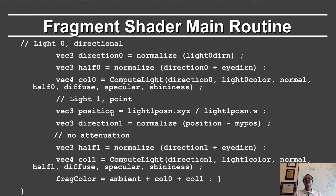For light 1, we first find the position by de-homogenizing: taking light 1 position x, y, z and dividing by w. The direction to the light source is then the position of the light minus the vertex location — similar to the viewing direction, which was eye position minus my position. This is normalized to get a unit vector. Note that we are not computing attenuation in this example, but you can do so in homework 2. The half vector is again computed by normalizing the direction to the light plus the direction to the eye. We then call compute light with direction 1, the light color, the normal, the half vector, and diffuse, specular, and shininess.